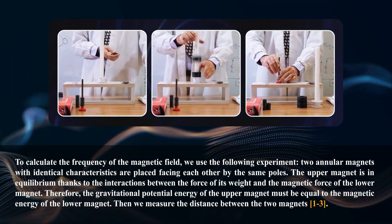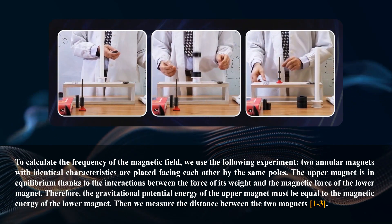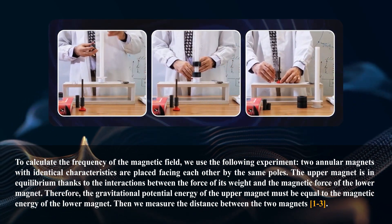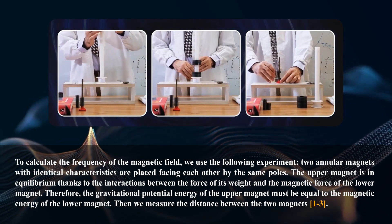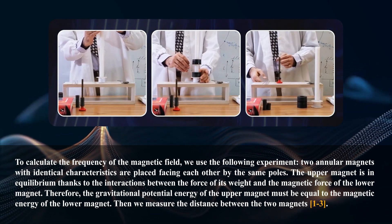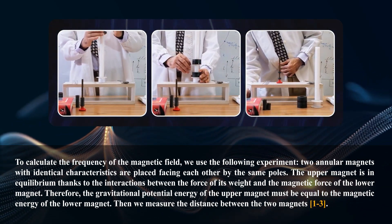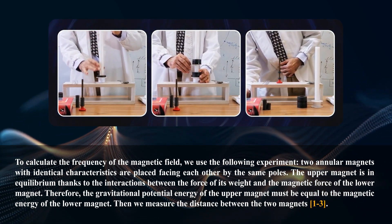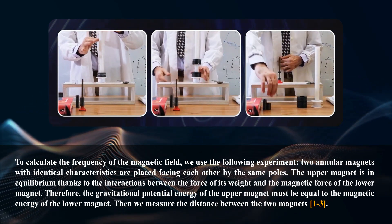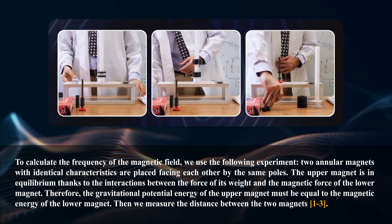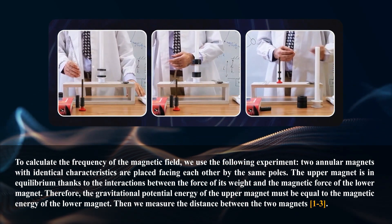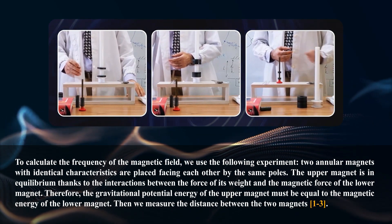To calculate the frequency of the magnetic field, we use the following experiment. Two annular magnets with identical characteristics are placed facing each other by the same poles. The upper magnet is in equilibrium thanks to the interactions between the force of its weight and the magnetic force of the lower magnet. Therefore, the gravitational potential energy of the upper magnet must be equal to the magnetic energy of the lower magnet.